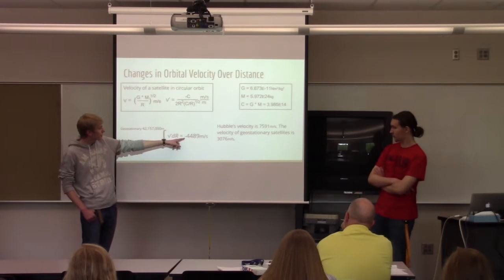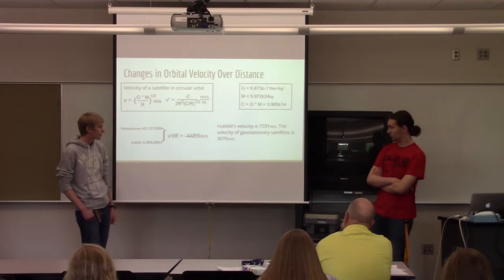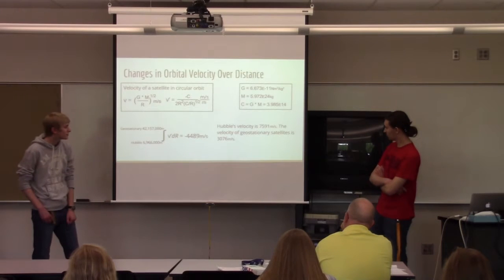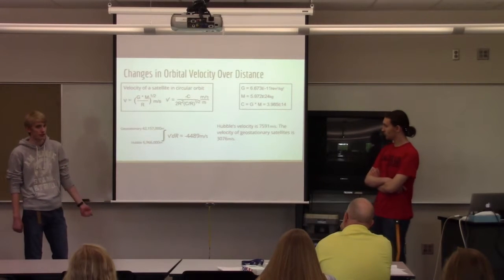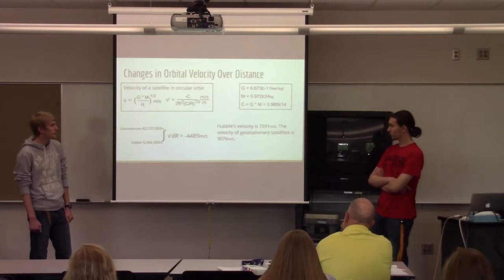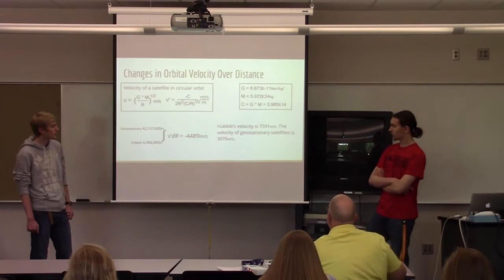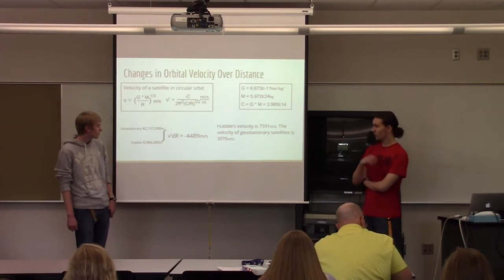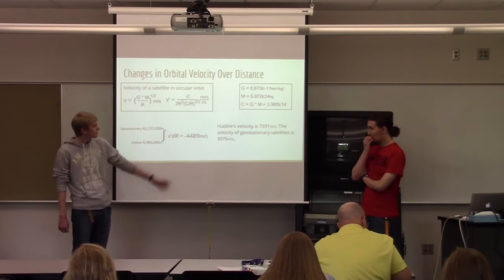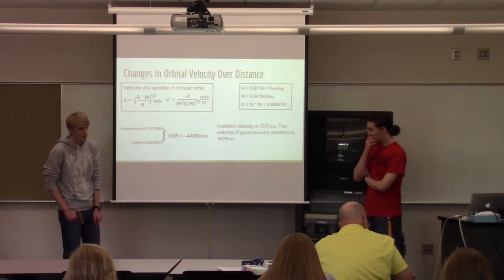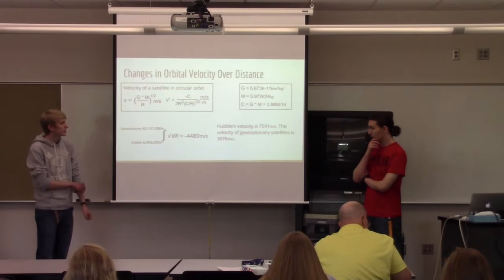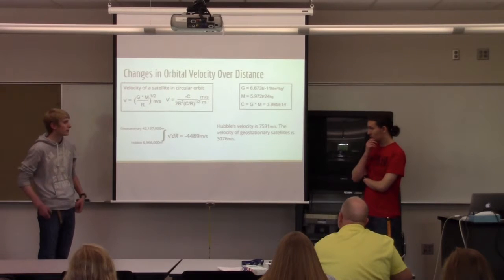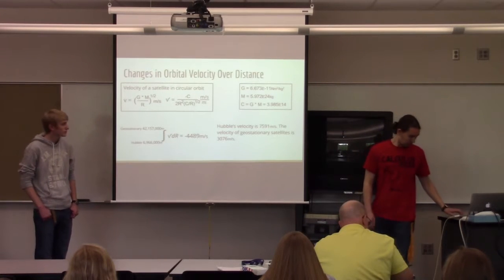With the equation I got, I came up with negative 4,489 meters per second. So that means that in geostationary orbit it travels about 4,500 meters per second slower. And that was pretty close because Hubble travels at 7,591 meters per second, while geostationary satellites travel at about 3,076.